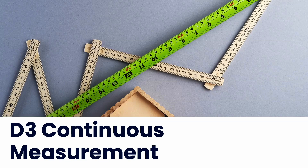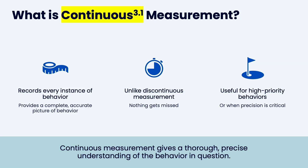Hello, everyone, and welcome back. We're going to talk about continuous measurement — ways we can collect data. You're going to learn both continuous measurement and discontinuous measurement. Continuous measurement records every instance of behavior, while discontinuous measurement misses some behavior. This is used for high priority behaviors or when precision is critical.